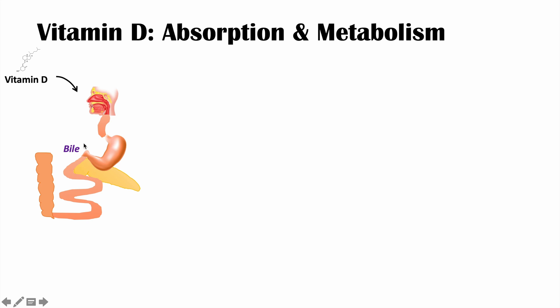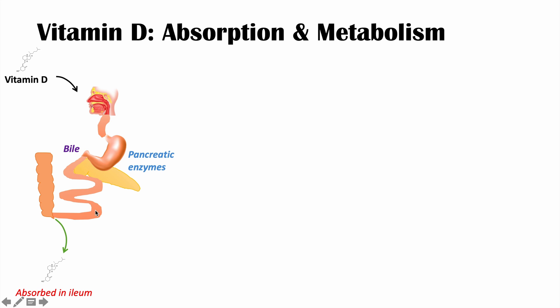Because vitamin D is a fat-soluble vitamin, we need bile. Bile helps to emulsify fats. We also need certain pancreatic enzymes like lipase to break down those fats so we can get access to the vitamin D. Eventually, as it traverses through the gastrointestinal system, it gets absorbed in the ileum.